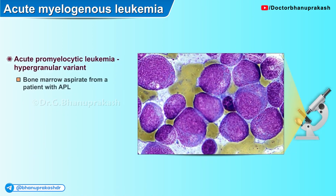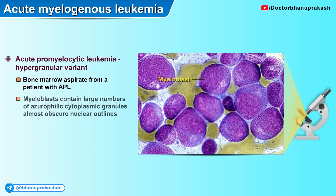Here is another histopathological image of a bone marrow aspirate from a patient with acute promyelocytic leukemia. The myeloblasts contain large numbers of azurophilic cytoplasmic granules which almost obscure the nuclear outlines.